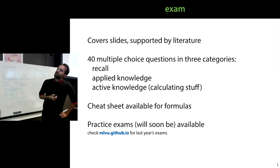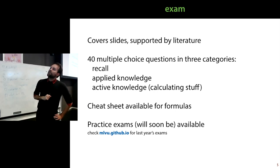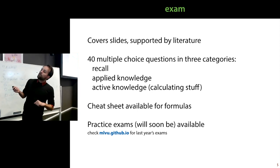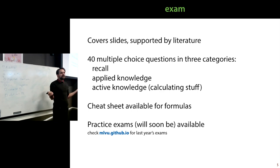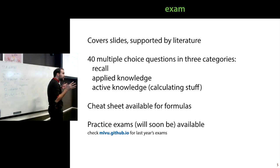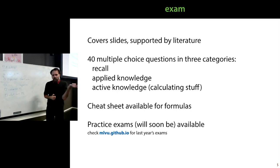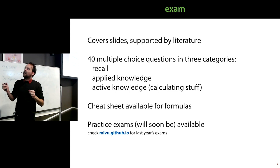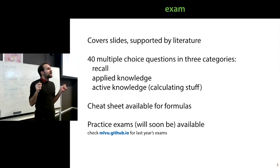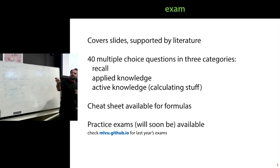The exam is multiple choice — 40 questions with four answers each. There are three types of questions: recall, which just asks something I've told you; applied knowledge, where you combine two things I've told you at different times; and active knowledge, which is the important part. One third of the exam is active knowledge — you need to calculate something, do a derivation, or follow an algorithm on some data. That practice comes from the homework sessions, so attendance is not obligatory, but don't complain if you can't do the active knowledge questions.